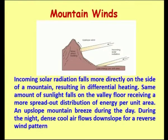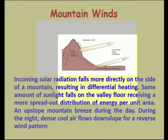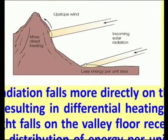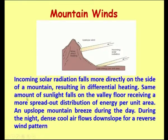For mountain winds, the same sunlight falls on two areas: on a flat area it falls spread out with very little energy per unit area, while on a slope it falls more perpendicular, giving more direct heating, creating a heat differential. Incoming solar radiation results in differential heating. The same amount of sunlight falls on the valley floor with a more spread-out distribution, so temperature is less there. During the night, the dense cool air flows down the slope, creating the reverse wind pattern. This is called the mountain wind.